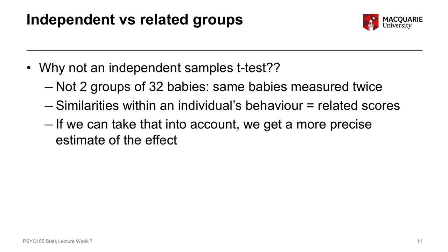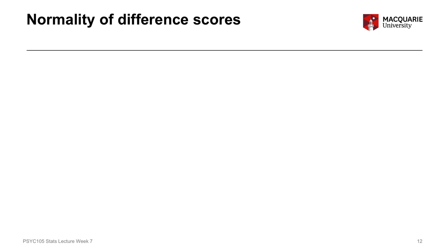Choosing the paired samples t-test, which accounts for the related nature of our data, gives us a more precise and more powerful test. It reduces variation across people. Remember that the t-statistic is a signal-to-noise ratio, and the noise represents variability. If we have less variability because of our study design and our analysis recognizes that, we end up with a more powerful estimate of the effect — which is why choosing this test over the independent samples t-test is so beneficial.